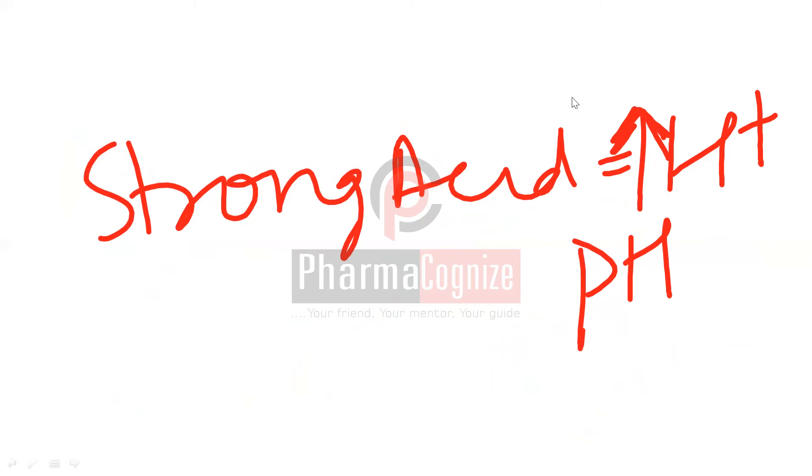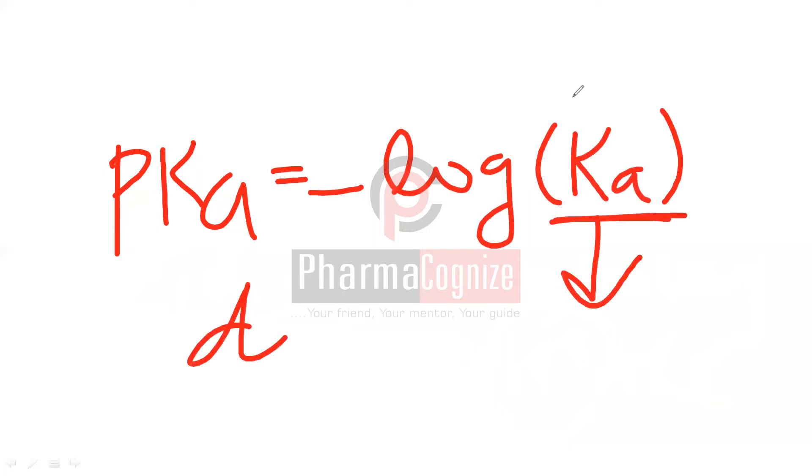Now we will see what is pKa. pKa is represented by minus log of Ka. Now what is Ka? Ka is the dissociation constant of an acid. The stronger the acid, the stronger the ionization. We always say that strong acids are 100% ionized. That means they are 100% dissociated. That means their Ka is very high.